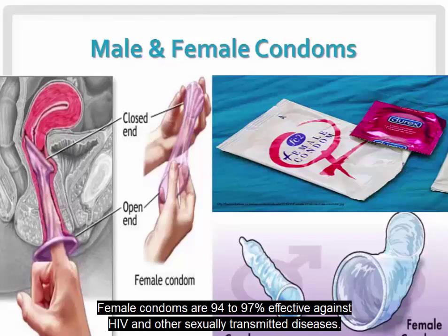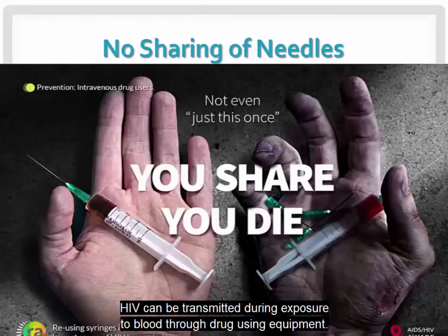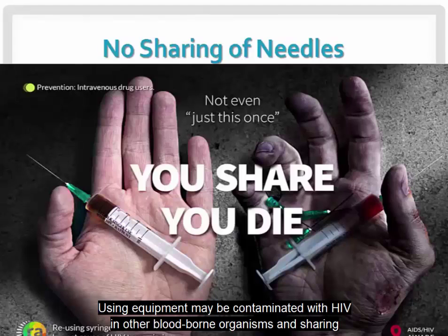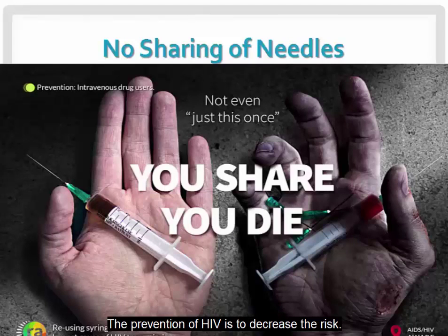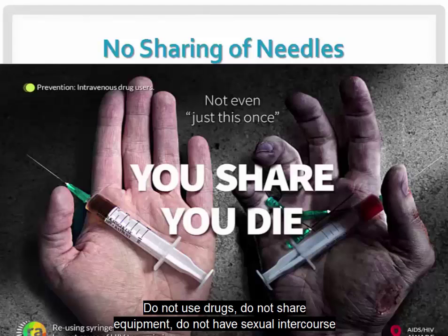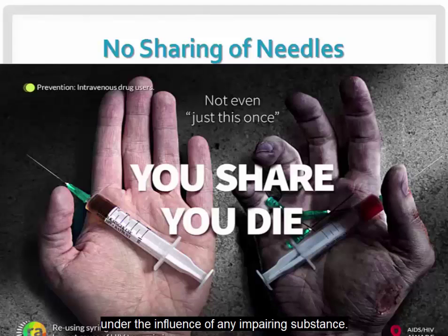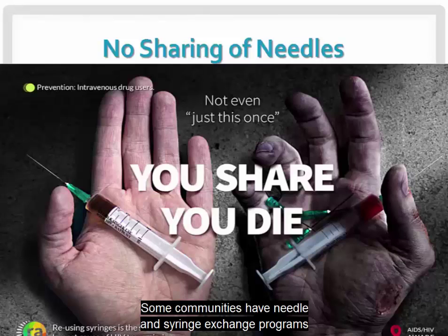Female condoms are 94 to 97 percent effective against HIV and other sexually transmitted diseases. HIV can also be transmitted during exposure to blood through drug-using equipment; sharing contaminated equipment can result in disease transmission. Prevention measures include: do not use drugs, do not share equipment, do not have sexual intercourse under the influence of any impairing substance. Some communities have needle and syringe exchange programs that provide sterile equipment in exchange for used equipment.